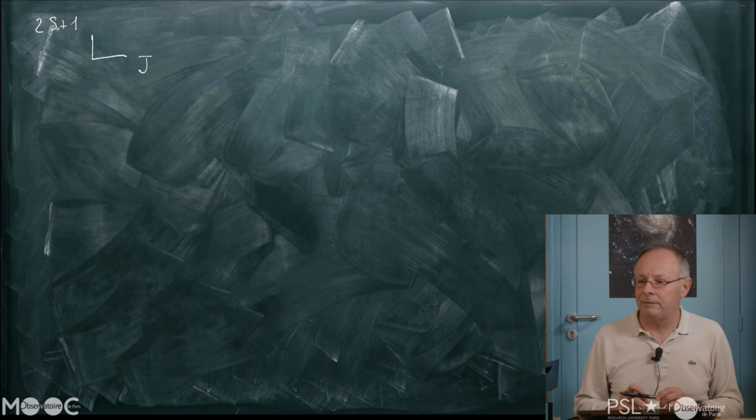En mécanique quantique, on décrit les niveaux atomiques des électrons par une notation de la forme 2S+1 L_J, où des nombres caractérisent le niveau d'énergie de l'électron : son moment cinétique orbital, son moment cinétique total J, et son moment cinétique de spin S, comme la Terre qui tourne sur elle-même. L'effet Zeeman normal correspond à un effet qu'on observe rarement, car la majorité des effets Zeeman sont des effets Zeeman anormaux.